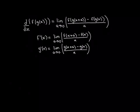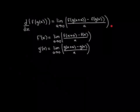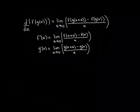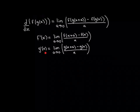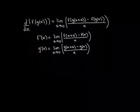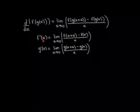Hopefully you've watched the video on why the product rule works, because our strategy here is going to be very similar, though slightly more complicated. We are trying to turn this into an expression involving f prime and g prime. By definition, f prime of x is the limit as a approaches 0 of f of x plus a minus f of x over a, and similarly for g prime of x. We want to get these structures into our expression, because in the limit as a approaches 0 these become the derivatives.